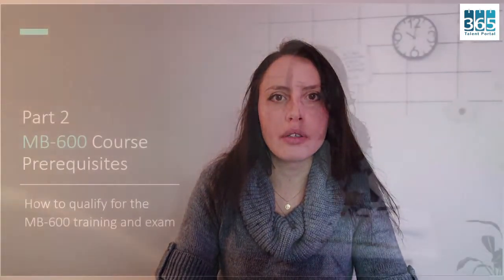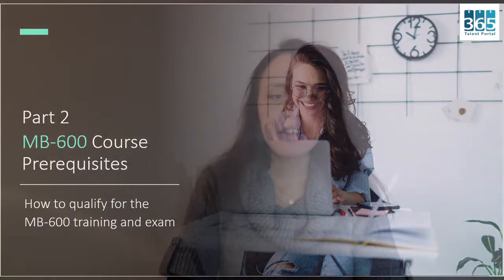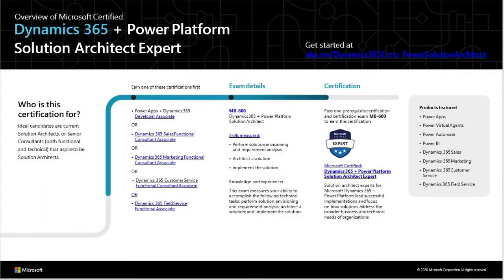The MB600 qualification is for you if you're an existing Solution Architect in the Microsoft Business Applications area and you're looking to take an exam to validate your skills, or if you're a functional or technical consultant who is looking to move into a Solution Architect role. This is a fairly advanced certification for people who already have experience in Microsoft Business Applications.